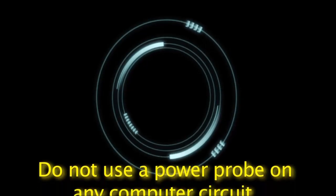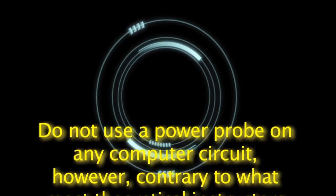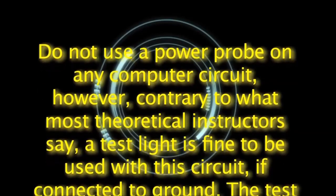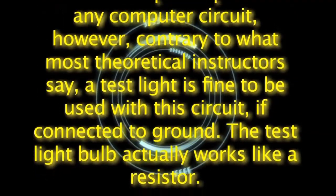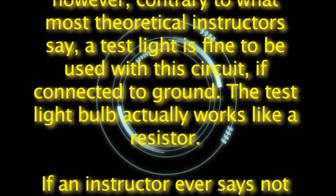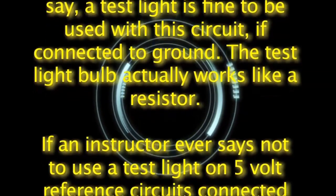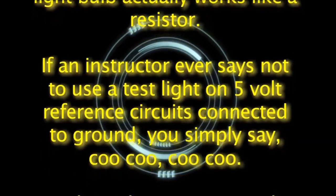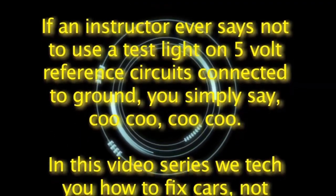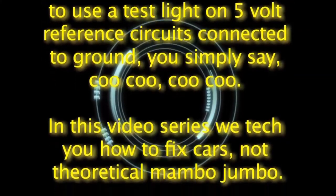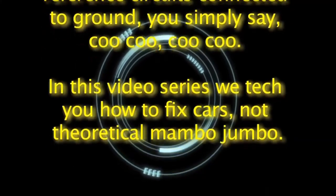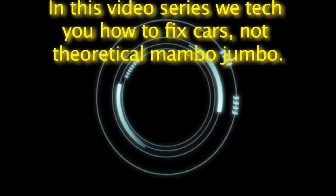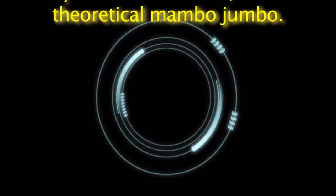Do not use a power probe on any computer circuit. Contrary to what most theoretical instructors say, a test light is fine to use with this circuit if connected to ground. The test light bulb actually works like a resistor. If an instructor ever says not to use a test light on five-volt reference circuits connected to ground, you simply say cuckoo cuckoo. In this video series we teach you how to fix cars, not theoretical mambo jumbo.